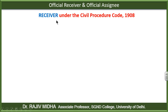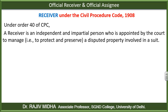Now the third point: Receiver under the Civil Procedure Code 1908. Under Order 40 of CPC, a receiver is an independent and impartial person who is appointed by the court to manage, protect and preserve a disputed property involved in a suit — court के अंदर एक case चल रहा है किसी property पर, उस property पर dispute है, दो व्यक्ति हैं जो कह रहे हैं कि यह property हमारी है. Court ने इस case में एक व्यक्ति को appoint कर दिया to manage, protect and preserve that property — then that person is receiver.